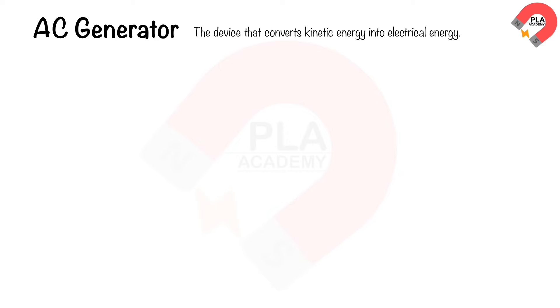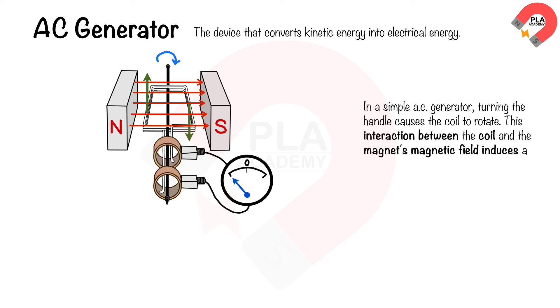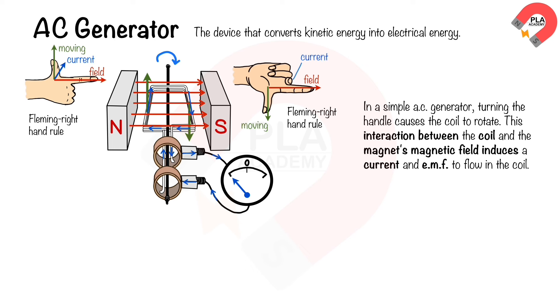The AC generator converts kinetic energy into electrical energy and is used in power stations to generate electricity. It is based on electromagnetic induction. In a simple AC generator, turning the handle causes the coil to rotate; the interaction between the coil and the magnet's field induces a current and EMF in the coil. The direction of induced current is determined by the Fleming right-hand rule: the thumb indicates the direction of force or coil's motion, the index finger indicates the field direction, and the middle finger indicates the induced current direction.